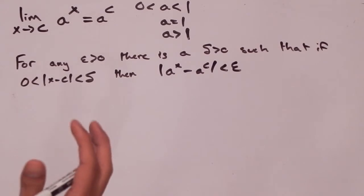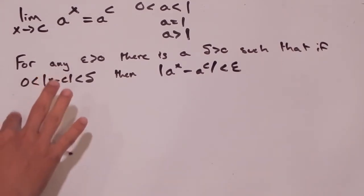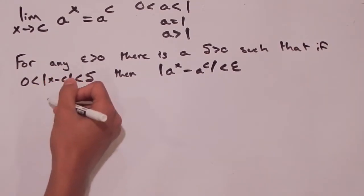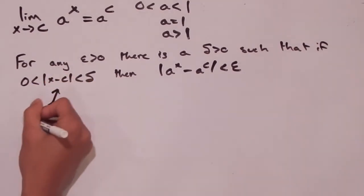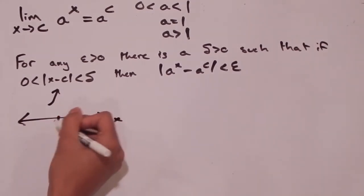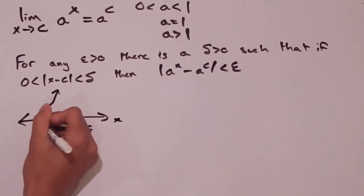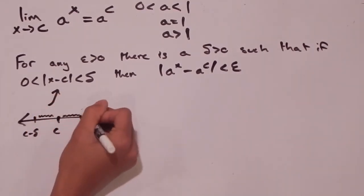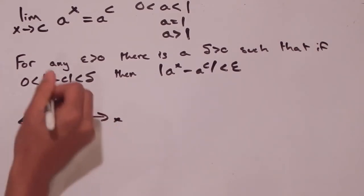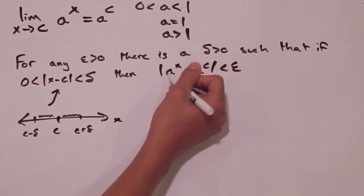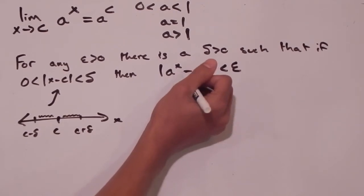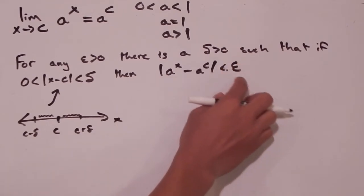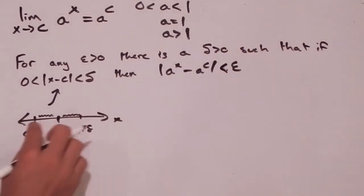This is something we did in our logarithmic proof. This implies that if we pick an x value on a number line between c minus delta and c plus delta, but not at c, and plug it in, we will find that the absolute value of a to the x minus a to the c is less than epsilon. And for any epsilon value we pick, we will be able to find a corresponding delta value.